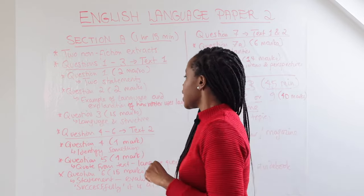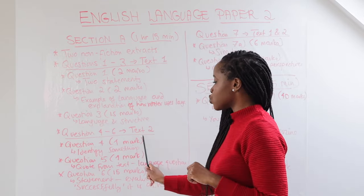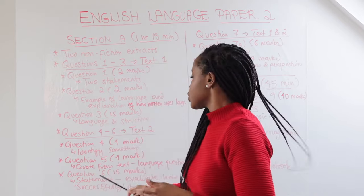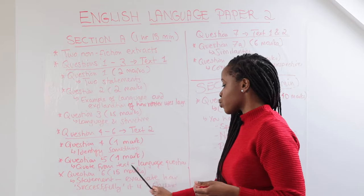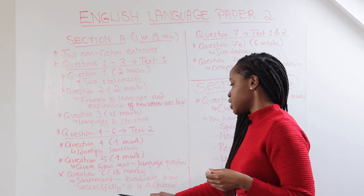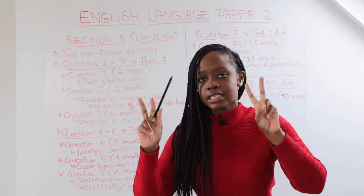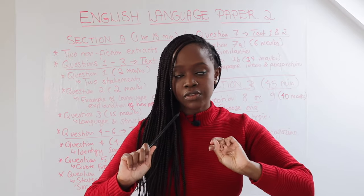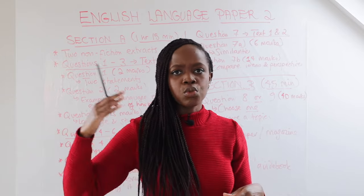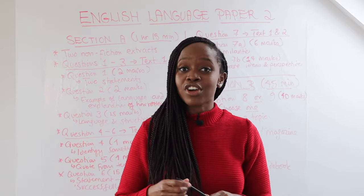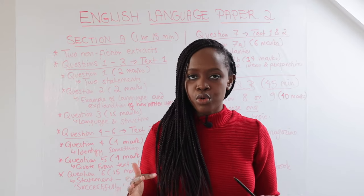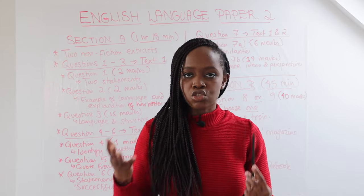Question four relates to text two and is worth one mark — you're asked to identify something within the text. Question five is also worth one mark and requires you to quote from the text; it's a language question. Question six is worth 15 marks. You're given a statement and must evaluate how successfully it is achieved. The examiner is not looking for a two-sided argument — you can simply say it is successful and support your points using language and structure references.